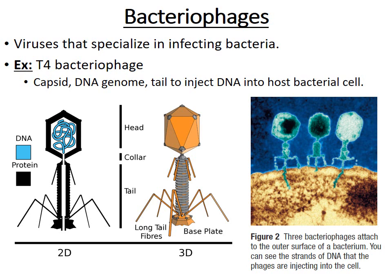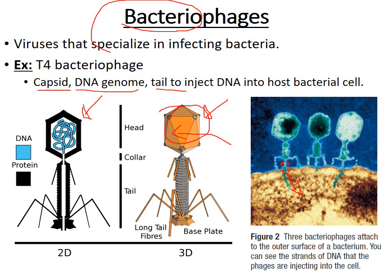One type of virus we'll study in detail is bacteriophages — viruses that specialize in infecting bacteria. The T4 bacteriophage has a head region containing the DNA, and a tail it uses to inject DNA into the bacterial cell it's targeting. The capsid, the protein coat, makes up the majority of the virus. The DNA genome is then used to take over the host cell and replicate.